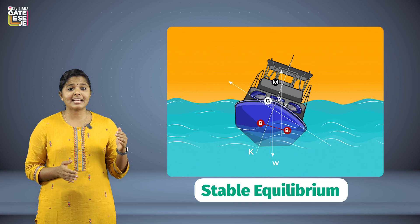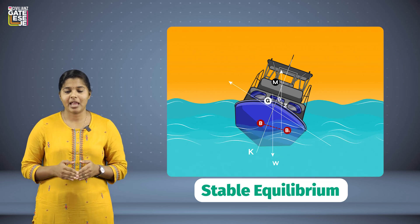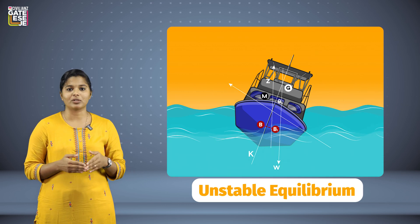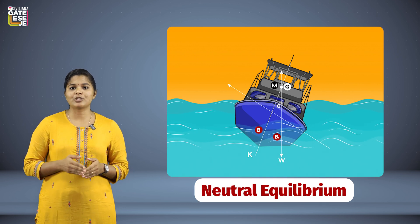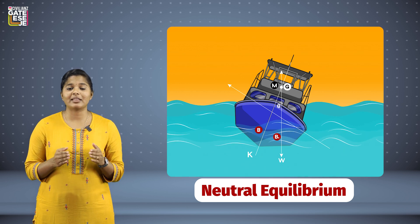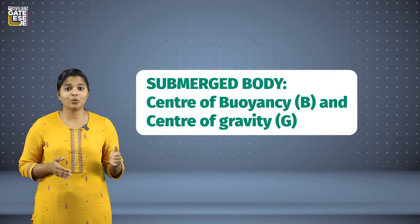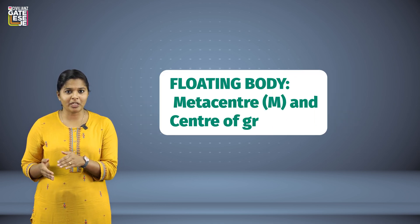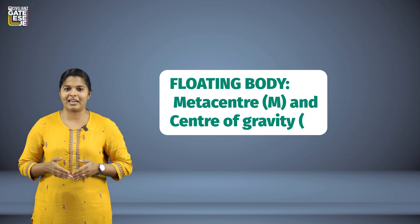For a floating body, if the metacenter lies above the center of gravity, a stable equilibrium condition is developed. An unstable equilibrium condition is developed when the metacenter lies below the center of gravity. Likewise the submerged body condition, neutral equilibrium is developed when the metacenter and center of gravity coincide. Keep in mind: for submerged bodies it was center of buoyancy and center of gravity, but for floating bodies it is metacenter and center of gravity.